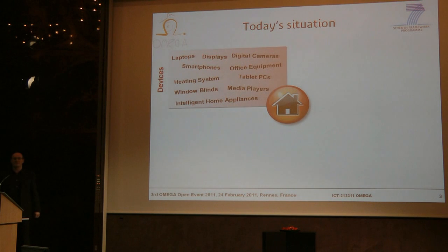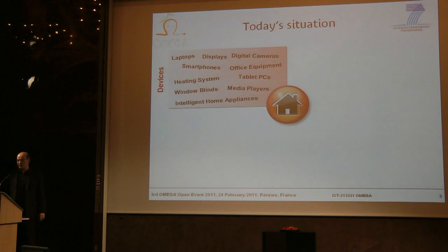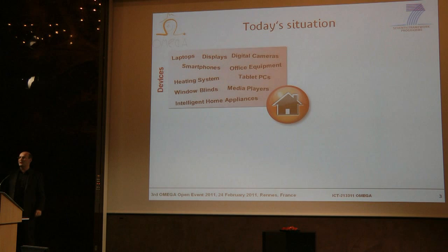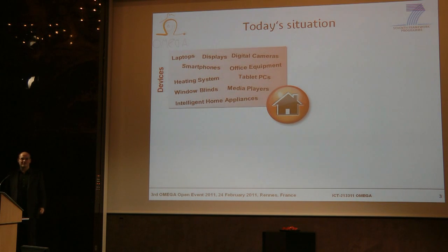First of all, there are the devices. We have several devices: digital cameras, laptops, smartphones, office equipment. But there are also other devices. Considering home automation, we have intelligent home appliances or window blinds which we want to control. There is a large variety of devices with multiple interfaces maybe.